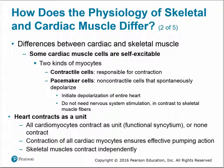Key differences between cardiac and skeletal muscle: cardiac muscle cells are self-excitable, meaning they can stimulate themselves rather than requiring voluntary nervous system input. There are two types of myocytes in cardiac muscle: contractile cells responsible for contraction, and specialized pacemaker cells, which are non-contractile but initiate depolarization of the entire heart. Because this is self-contained within the heart, it does not rely on nervous system stimulation, in contrast to skeletal muscle.